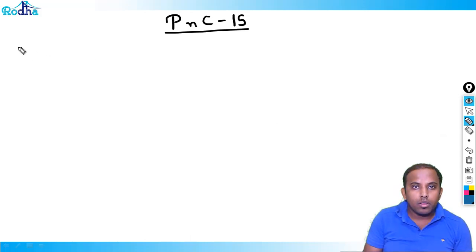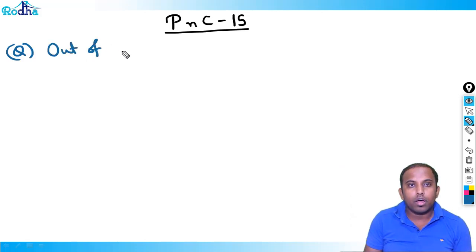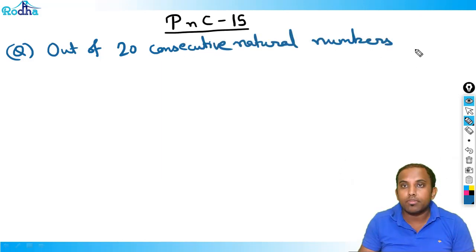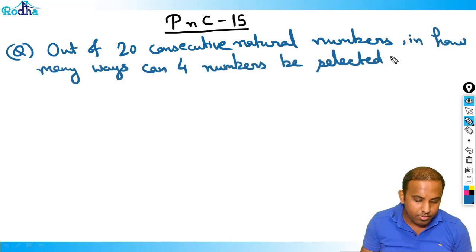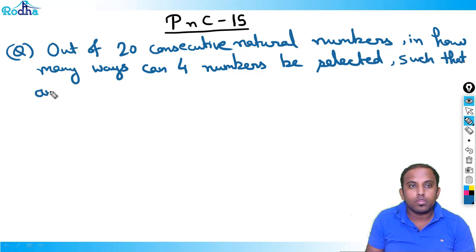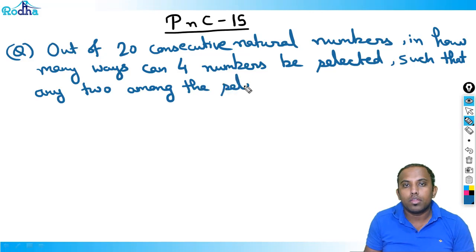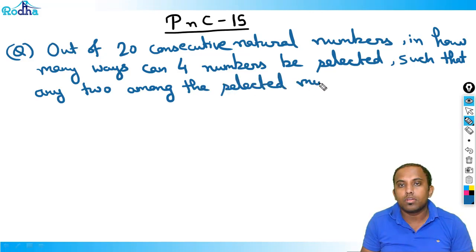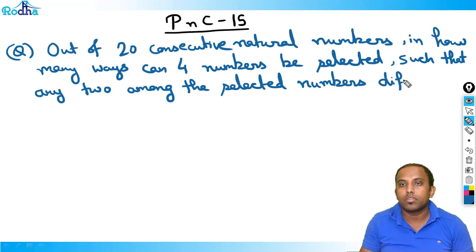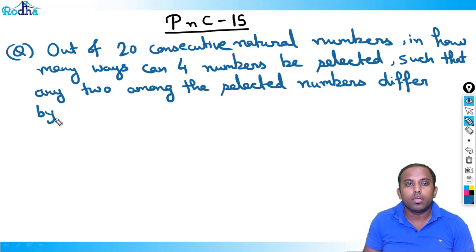So this is the next question here. Out of 20 consecutive natural numbers, in how many ways can four numbers be selected such that any two among the selected numbers differ by at least three?